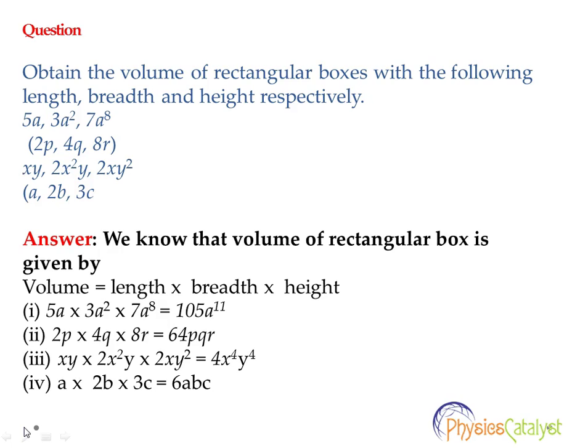Now let's look at the variable expressions. Here the variable expressions are a, a squared, a to the power 8. So multiplying these three terms, we get a to the power 11. This is as per the exponent law.